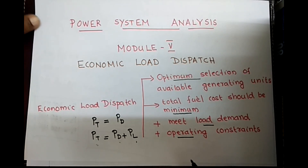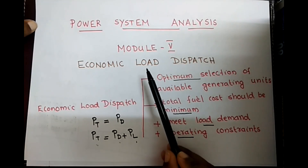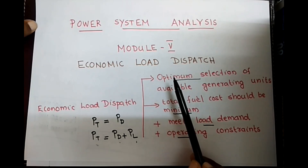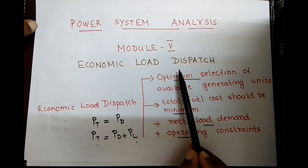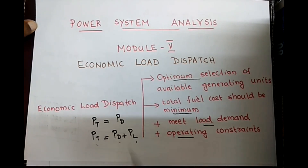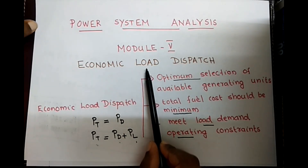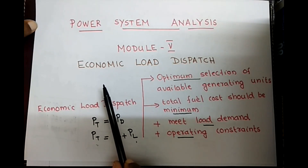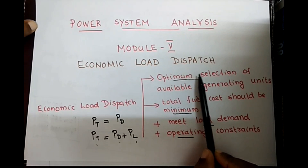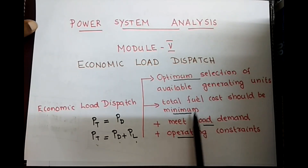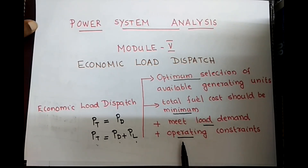Dear students, welcome to this video session. Through this session we are analyzing some problems from your fifth module: Economic Load Dispatch. Before going to the problem — what do you mean by economic load dispatch? The condition is to dispatch the load economically through the optimum selection of power generating units so as to minimize the total fuel cost while satisfying the load demand and the operating constraints. There are two types of economic load dispatch problems.